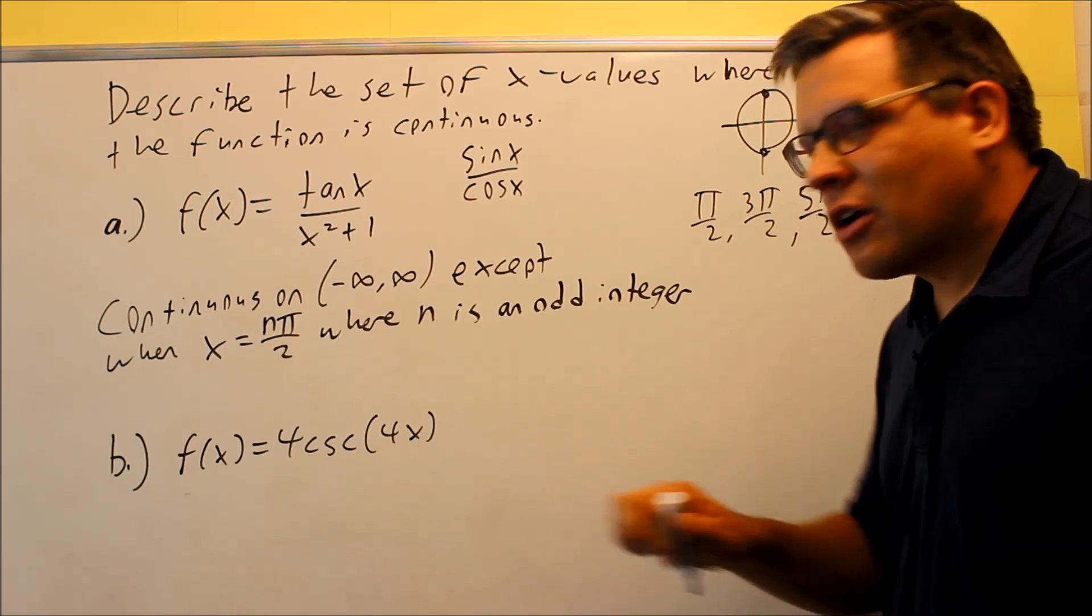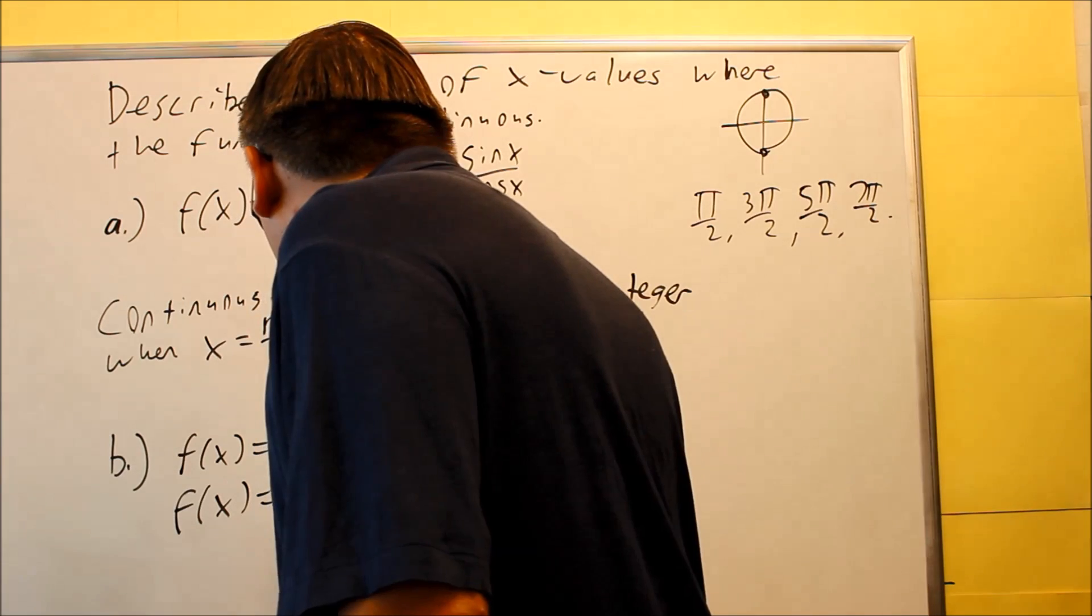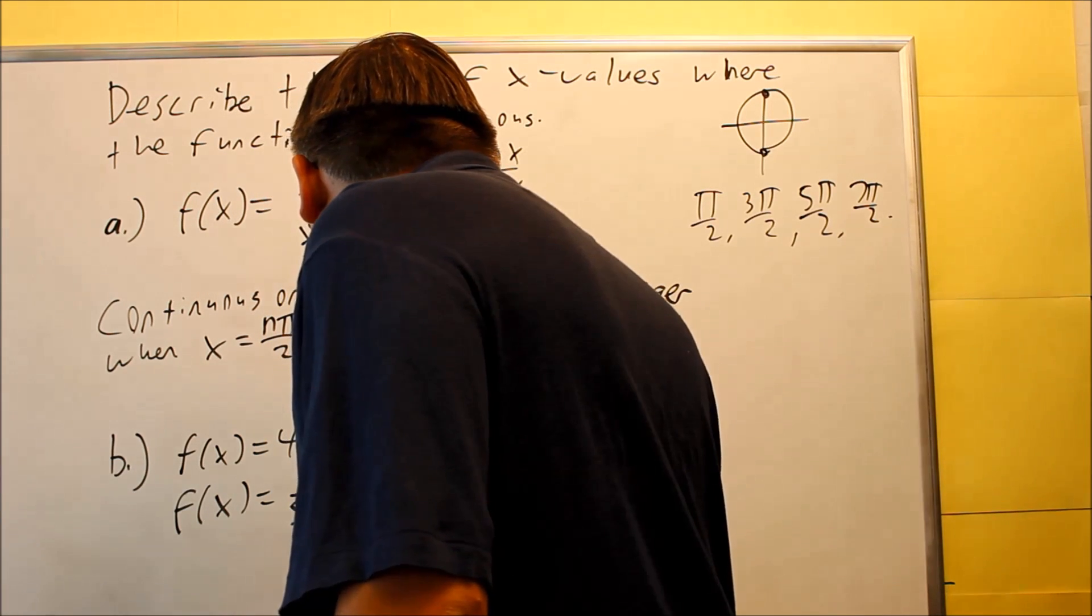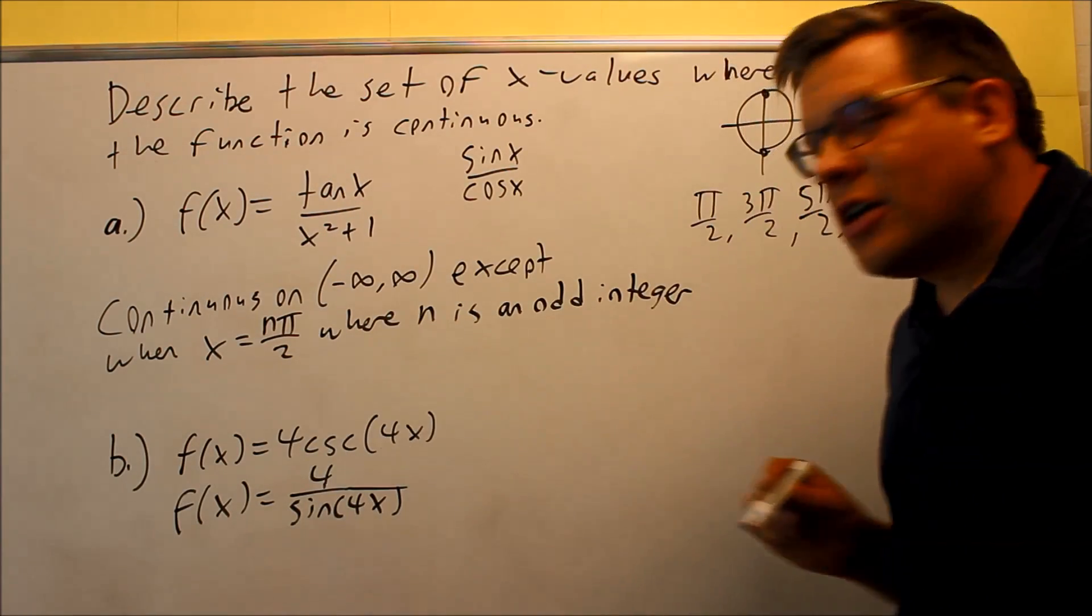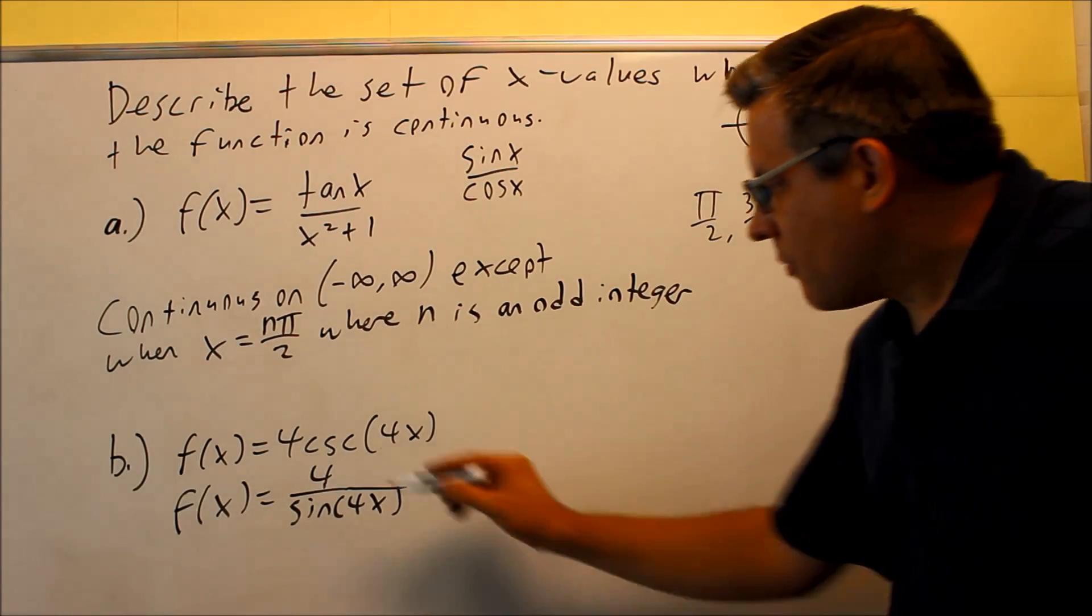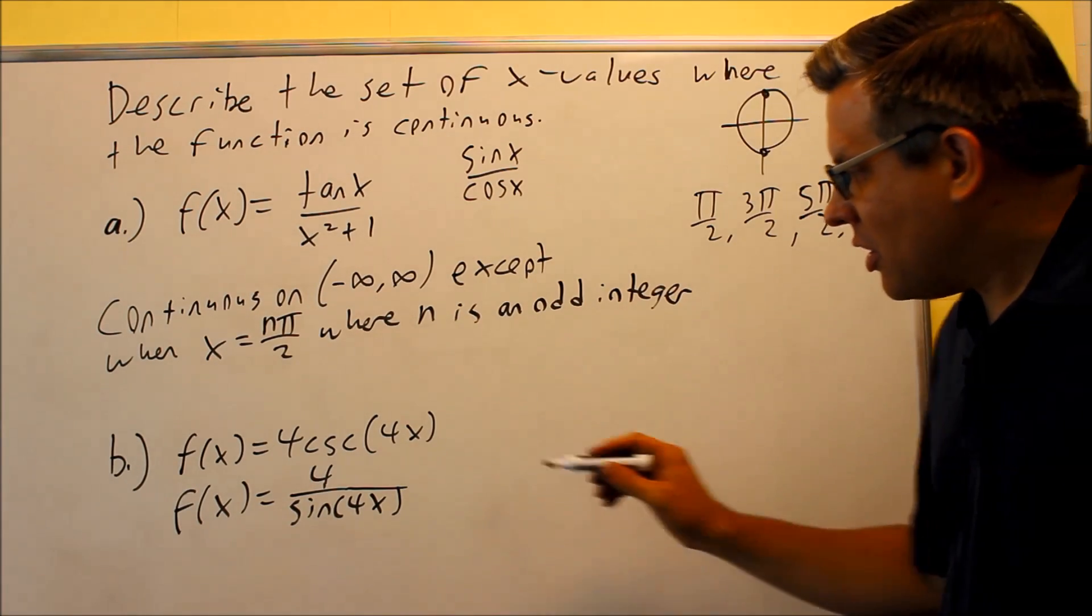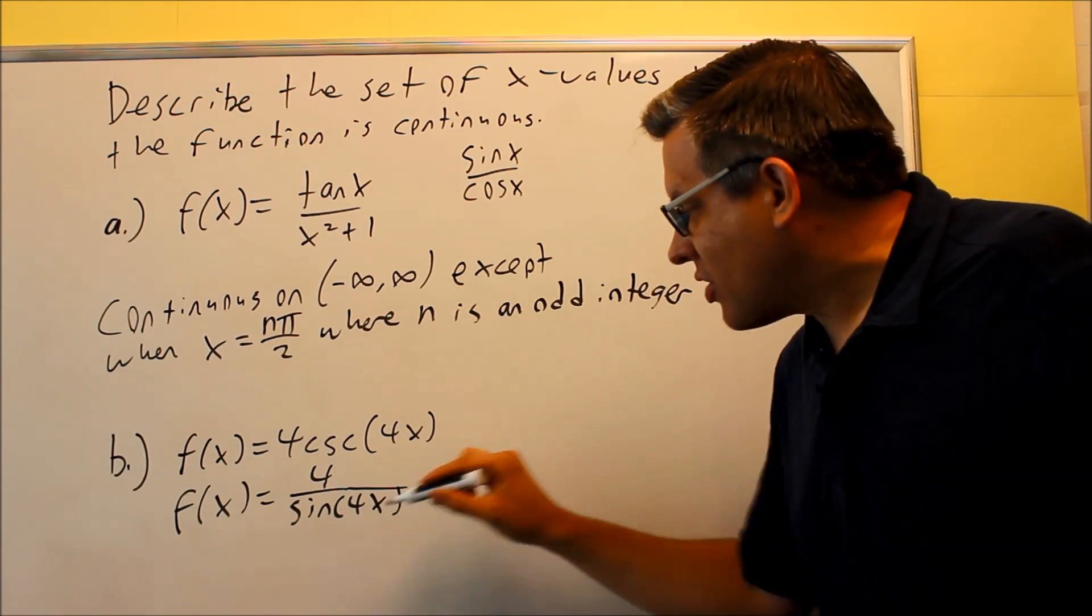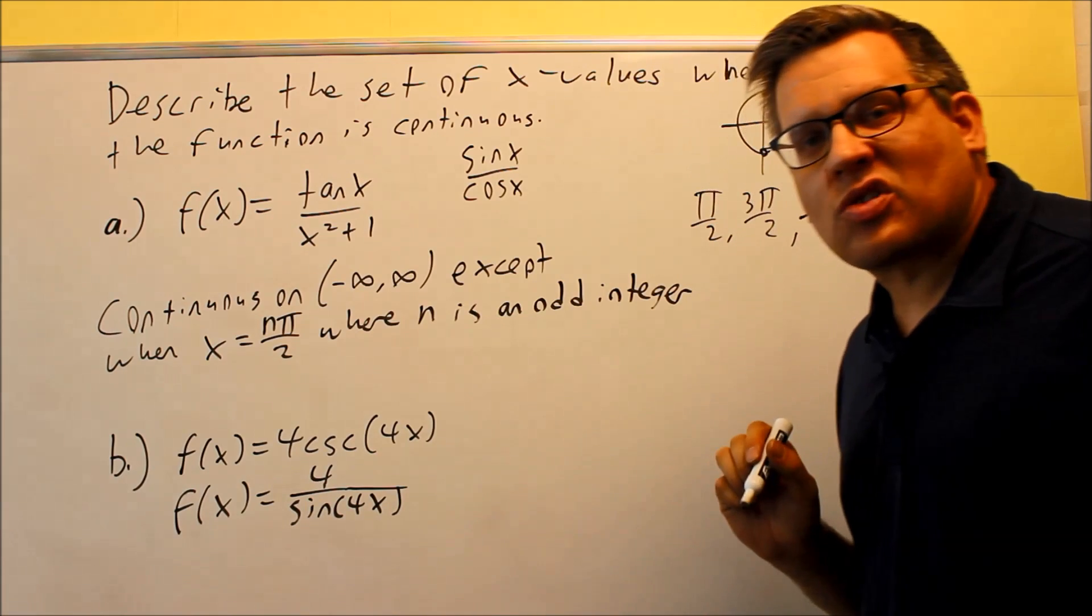Let's take a look at the second one. Now for this one, I can rewrite this as f of x equals four over sine of four x. That's the identity that I want to use for cosecant. We have a sine in the bottom. So this time, I have to look at the unit circle and see where does sine equal zero. Now I have a four x in there. I'm going to temporarily ignore that. I'm just going to consider this as sine x only.